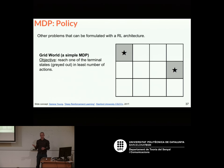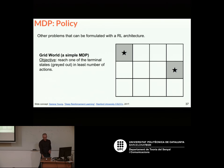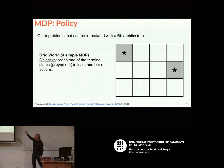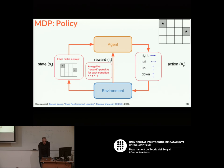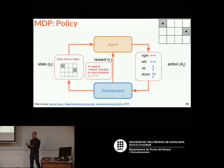There's a very classic problem in reinforcement learning called the grid world, which allows me to explain states and actions before going forward with the formulas. In this grid world problem, the goal is to reach one of the terminal states — the ones with a star — in the least number of actions. Each cell in the grid is a state, as described by the environment. The agent can take different actions: it can move right, left, up, or down. The agent is always observing some state and takes some action to solve the task — in this case, to go to a terminal node.